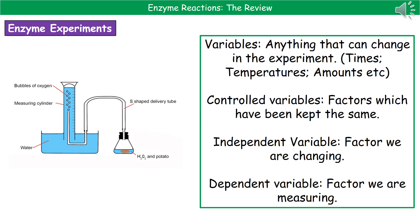Some key experimental terms to remember: a variable is anything that could change in the experiment, such as time, temperature, or the amount of something. Controlled variables are the ones we want to keep the same. The independent variable is the one you are choosing to change — the thing you're actually investigating. The dependent variable is what we measure as a result of that change. Make sure you know the difference between the dependent, independent, and controlled variables.